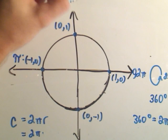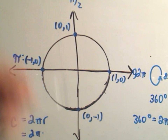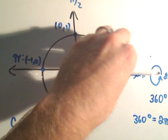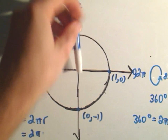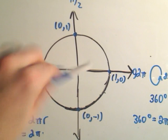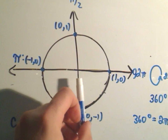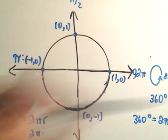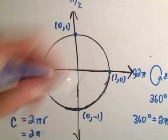Let me speed through this. π/2 is the top, 3π/2 is at the bottom. Think about it: 0, π/2, 2π/2 which is π, 3π/2, and 4π/2 which is 2π.